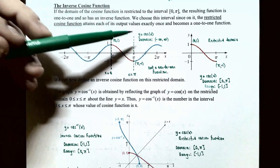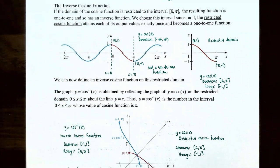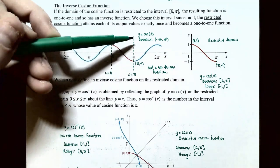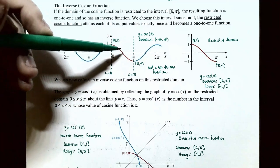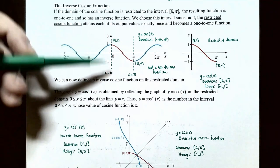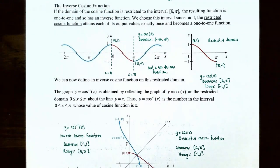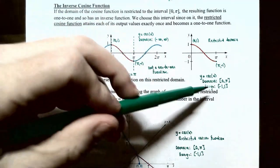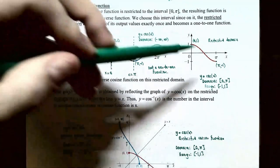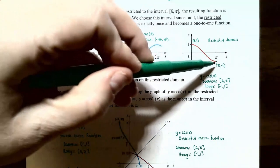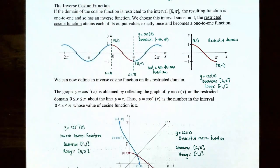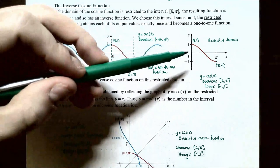Looking at the graph of y = cos(x), the domain is all real numbers and it does not pass the horizontal line test. However, if we restrict the cosine function to the domain [0, π], between x = 0 and x = π the cosine function obtains every output value exactly once. This is the restricted cosine function, with domain [0, π] and range [−1, 1]. It goes from the point (0, 1) down to (π, −1) and is now a one-to-one function with an inverse.